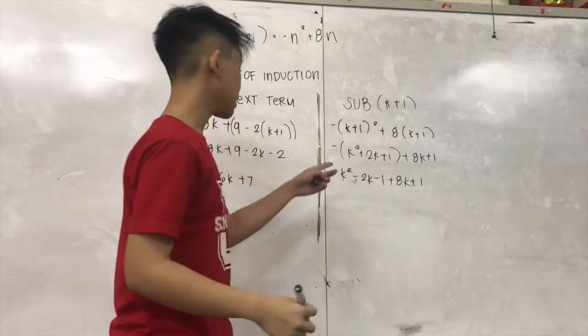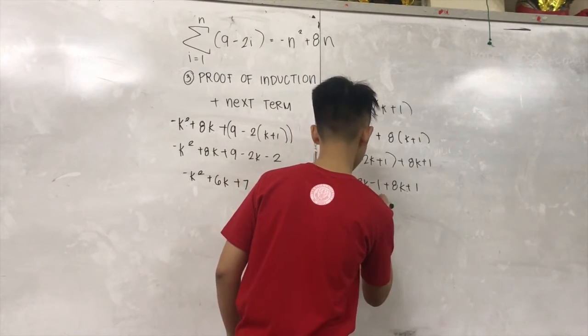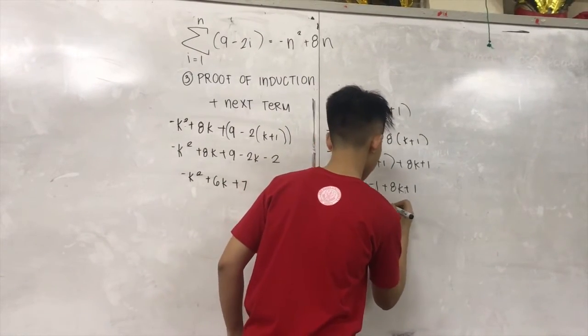So, we will also simplify the like terms of this one. So, negative K squared plus 6K plus 7.